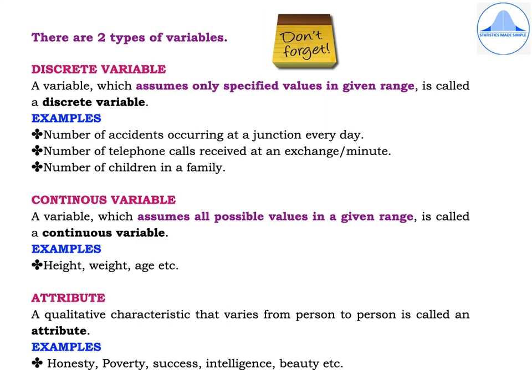There are two types of variables. A discrete variable is one which assumes only specific values in a given range. Examples include the number of accidents occurring at a junction every day, the number of telephone calls received at an exchange per minute, and the number of children in a family. A continuous variable is one which assumes all possible values in a given range. Examples include heights, weights, and ages.